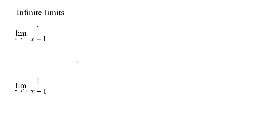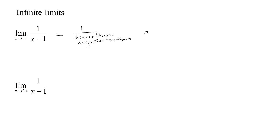One place where one-sided limits are really important is when considering infinite limits. Take 1 over x minus 1 as x goes to 1 from the left. Since x is always 1 minus a bit, x minus 1 is a negative number getting closer and closer to 0 — so we have 1 divided by tinier and tinier negative numbers. A positive divided by a negative is negative, and dividing by ever-smaller numbers makes the result grow without bound, so the limit is negative infinity.